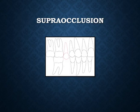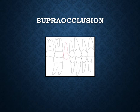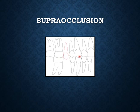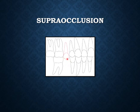Supra-occlusion is the situation whereby an unopposed or non-occluding tooth extends beyond the occlusal plane, as can be seen here. When the patient occludes in centric occlusion, the tooth will exceed the occlusal plane towards the opposing space. This occurs because there is no opposing tooth to act as a stopper to prevent further eruption.